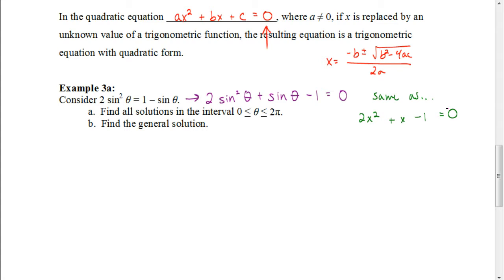Otherwise, you can leave it in the form that it's in. You just want to recognize what the a, b, and c are. So our a in this case would be the 2, our b would be 1 because it's 1 sine of theta, and our c would be negative 1.